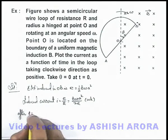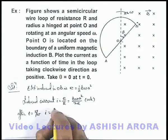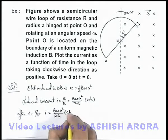After t equals pi by omega, current will be the same magnitude, that is B omega a squared by 2R, but its direction will be clockwise.